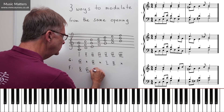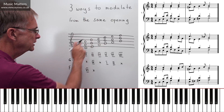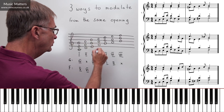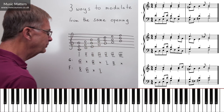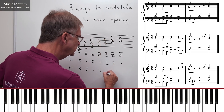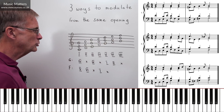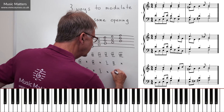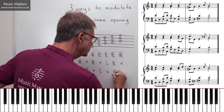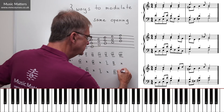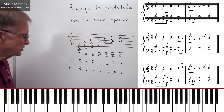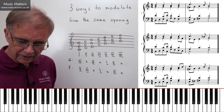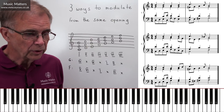Chord III is no good — F major has a B flat, and chord III in C has B natural. Chord IV in C major is chord I in F major. Chord V in C has a B natural — no use. Chord VI in C would be chord III in F — a possible pivot chord. Chord VII has B natural — no use. So you end up with a different set of possible pivot chords, but you've got several options.